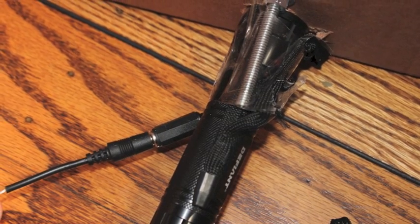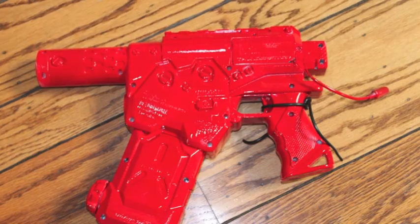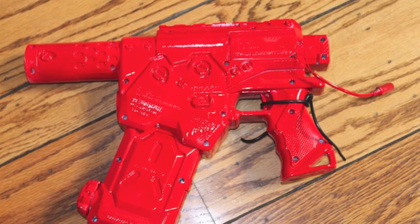The lights are inexpensive flashlights we bought at Home Depot and Switch Adapted, and the squirt gun is a Nerf Super Soaker.